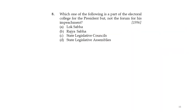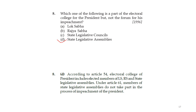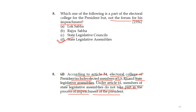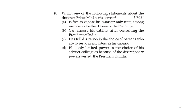Next: which one of the following is part of the electoral college for the President but not a forum for his impeachment? Options: Lok Sabha, Rajya Sabha, state legislative council, state legislative assembly. The answer is D — state legislative council. According to Article 54, the electoral college of the President includes elected members of Lok Sabha, Rajya Sabha, and state legislative assemblies. Under Article 61, members of state legislative councils do not participate in the impeachment of the President.